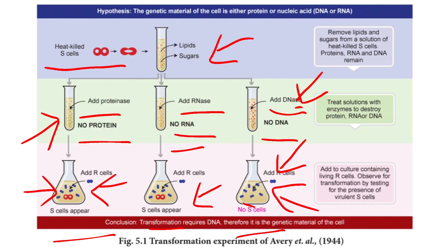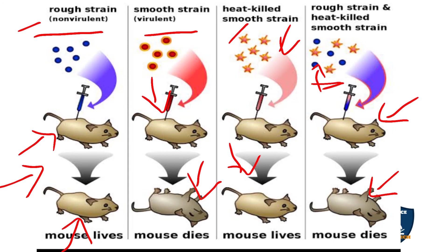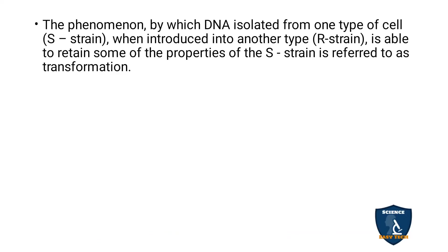In this transformation, when the DNA of the virulent S type reacts with the non-virulent R strain, the R strain becomes the S type — virulent. This changing of R type into S type is called DNA transformation. It was proved by Griffith and supported by Avery and colleagues, who concluded that DNA is the only genetic material in living organisms.